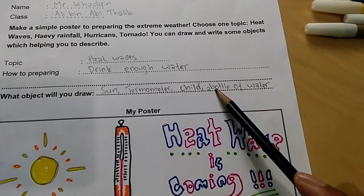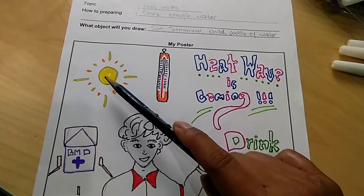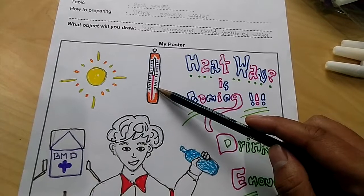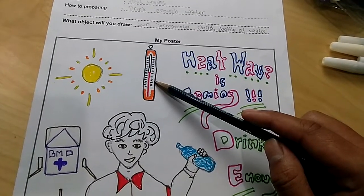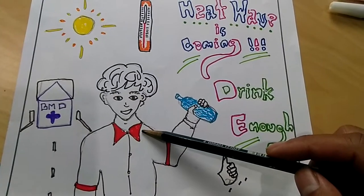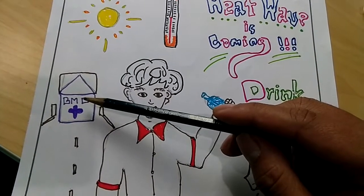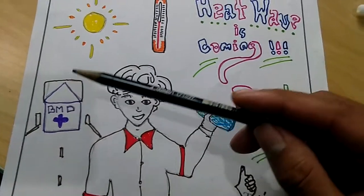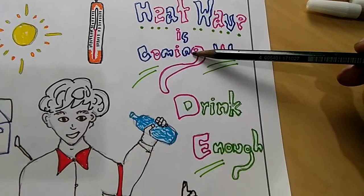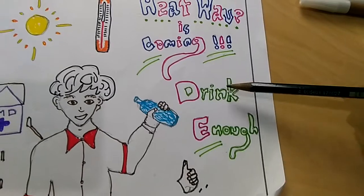This is my completed poster. I drew a sun to show heat waves, a thermometer — which is the tool for measuring temperature — a child holding a bottle of water, and our school in the background. I wrote 'heat wave is coming' and 'drink enough water' on the poster.